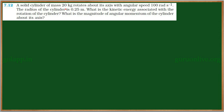See this problem. A solid cylinder of mass 20 kg rotates about its axis with angular speed of 100 radians per second. The radius of the cylinder is 0.25 meter. What is the kinetic energy associated with the rotation of the cylinder? What is the magnitude of angular momentum of the cylinder about its axis?